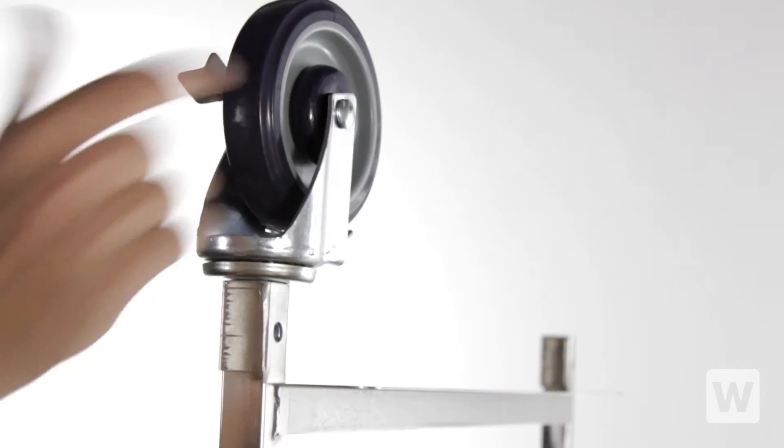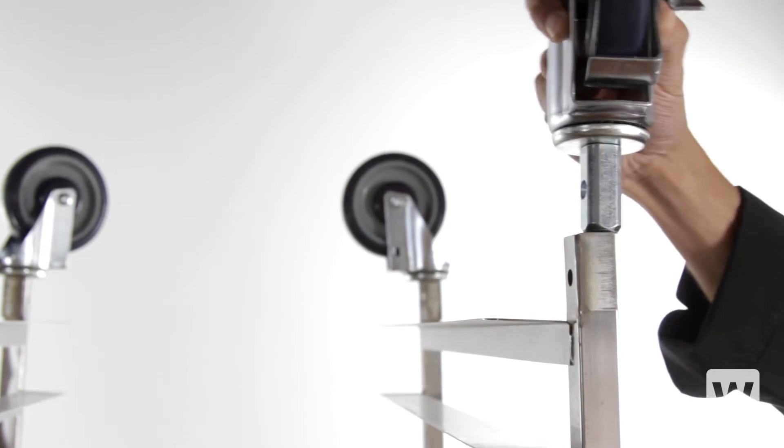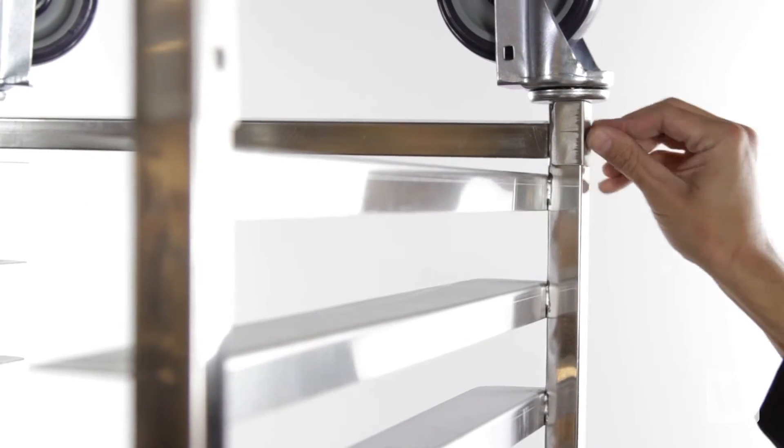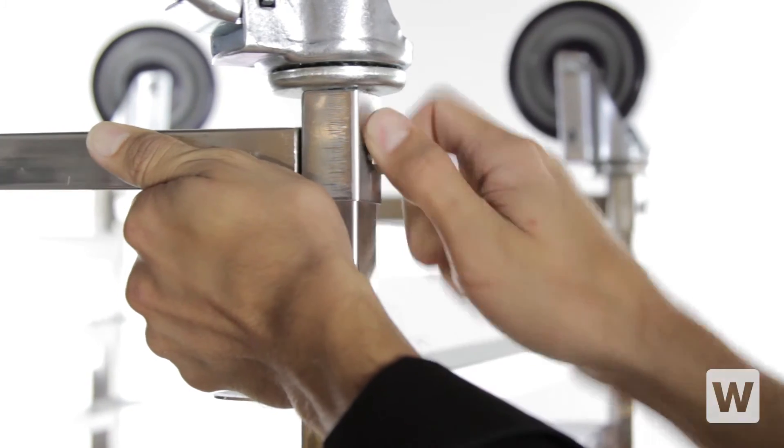Insert each caster into the bottom of the frame. The locking casters should be installed on the same end of the rack so they can be set easily. Once the casters are properly aligned, the bottom support post can be installed. The bolts go through the hole, securing the caster and the post to the bottom of the rack.